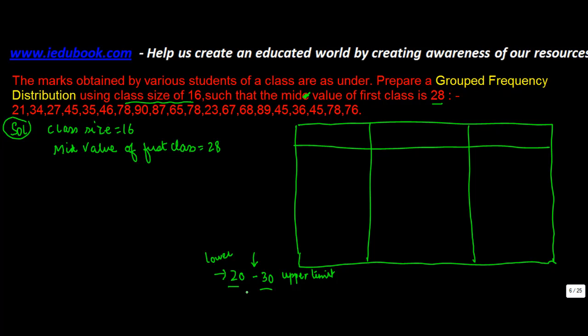So when you talk about mid value, mid value is basically equal to lower limit plus upper limit divided by 2. So let's say, if this was 20 and 30, I'm just giving you an example and then we'll come to the actuals. 20 plus 30 divided by 2 is equal to 50 divided by 2, or 25.